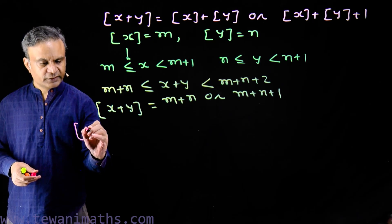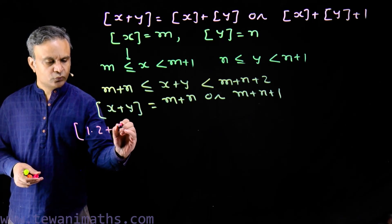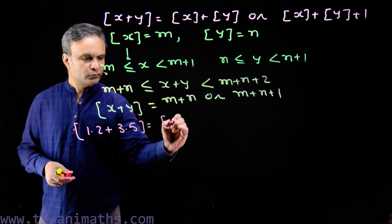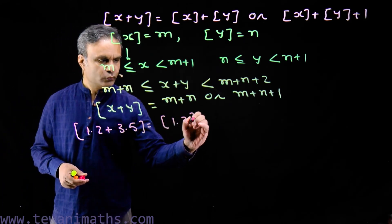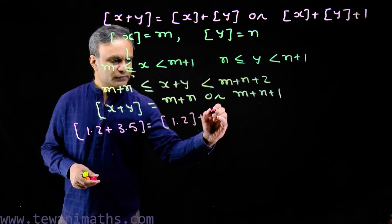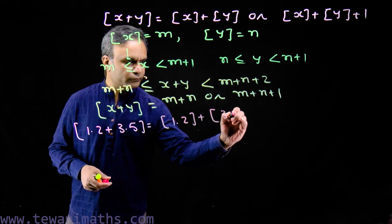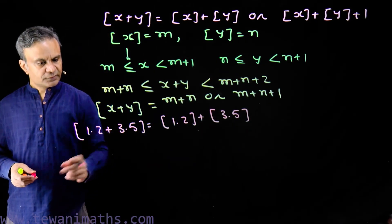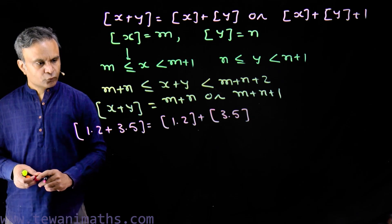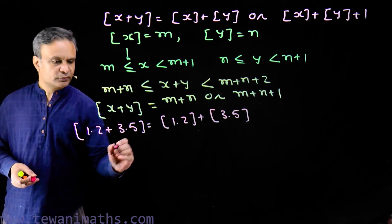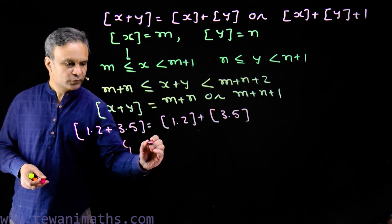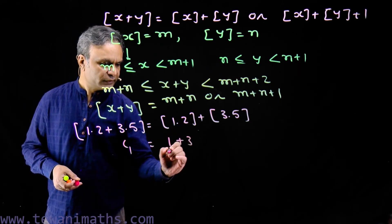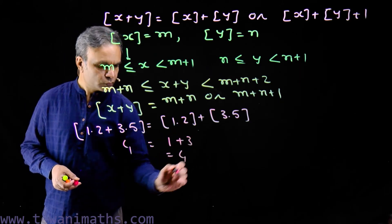For example, the greatest integer of 1.2 plus 3.5 equals the greatest integer of 1.2 plus the greatest integer of 3.5. This sum is 4.7, so the greatest integer will be 4. And here we have greatest integers 1 and 3, which is equal to 4. So this is true.